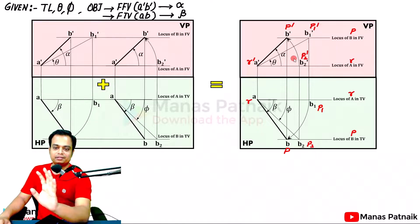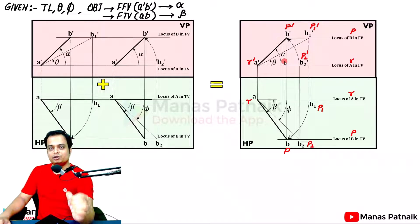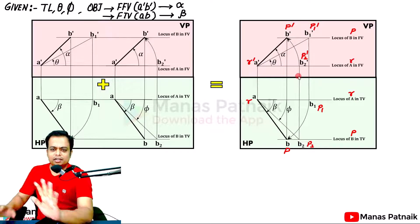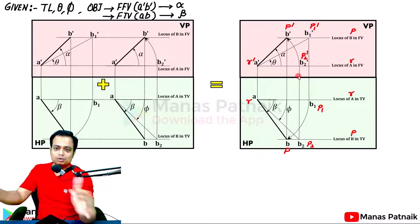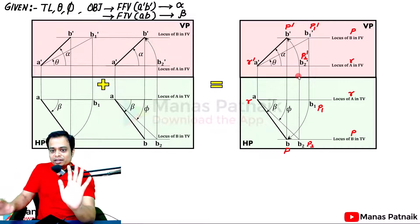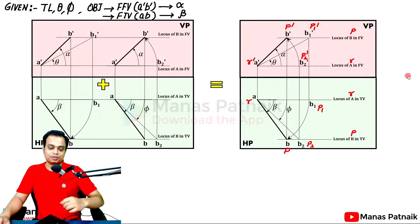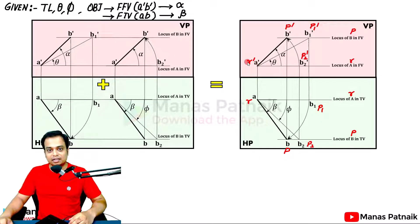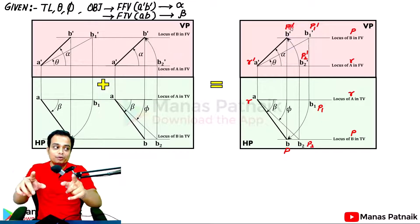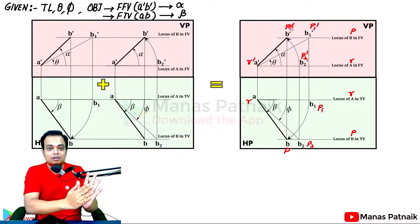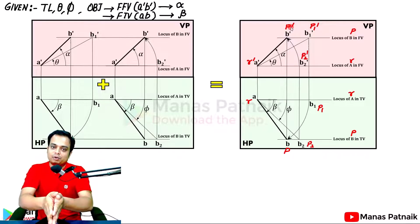This is a diagram you've already seen: if a line is inclined simultaneously to both HP and VP, we follow a standard procedure. This procedure is for the first quadrant but is perfectly applicable to the remaining three quadrants. For the second quadrant, both the front view (A dash B dash) and the top view (AB) will be above the reference line — A dash corresponds to R dash and B dash corresponds to P dash. Take a screenshot of this picture as a reference for the projection we are about to make.